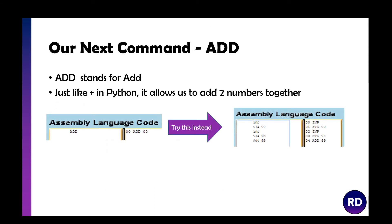ADD stands for add — just like using plus in Python, it allows us to add two numbers together. For example: input a number, store it in slot 99; input another number, store it in slot 98; then ADD 99. If you inputted 10 and 5, it would have 5 in the accumulator, fetch the 10, and add them together to make 15.